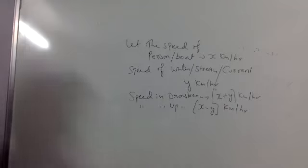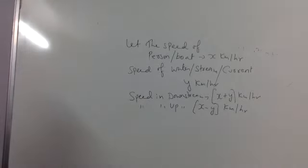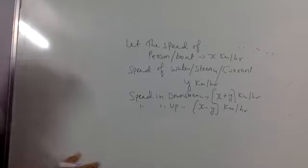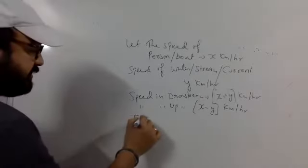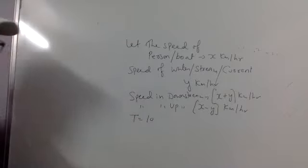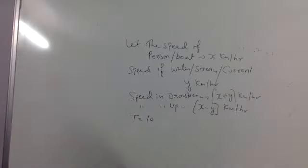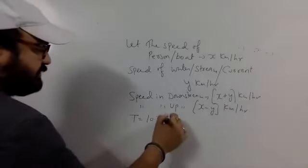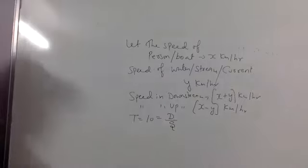Now read the question please. A boat goes 30 km upstream and 44 km downstream in 10 hours. In 10 hours. Yaani ki time of journey diya hua hai 10 gante, right? Yes sir. What is the formula to calculate time? You will say distance upon speed, right?